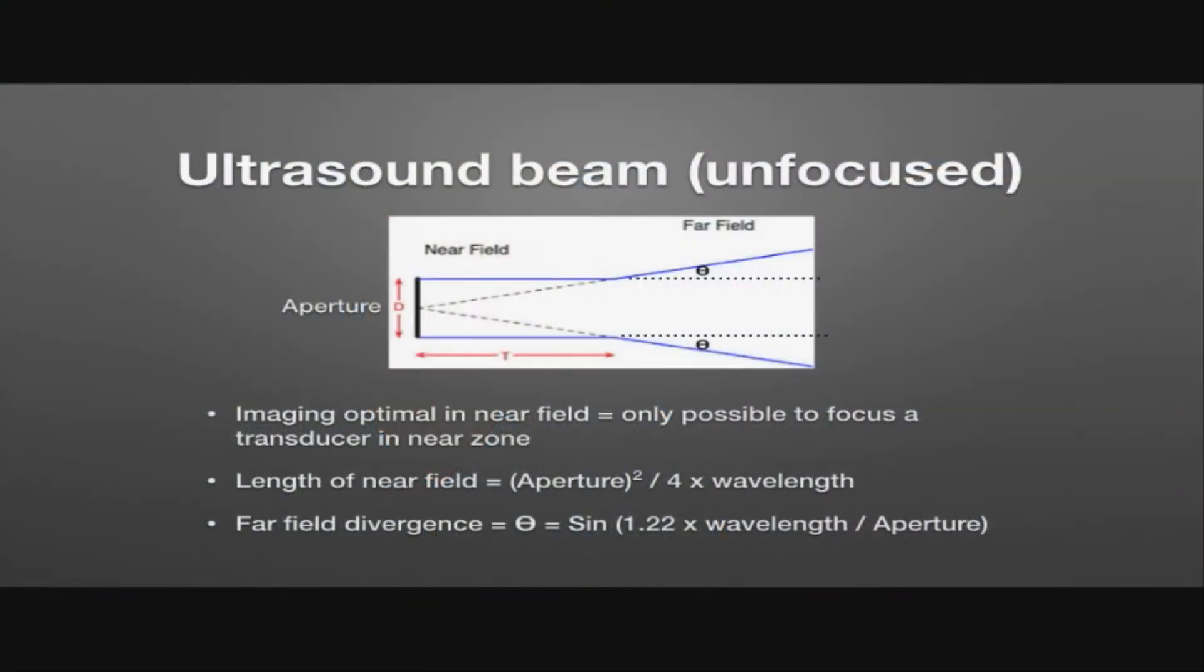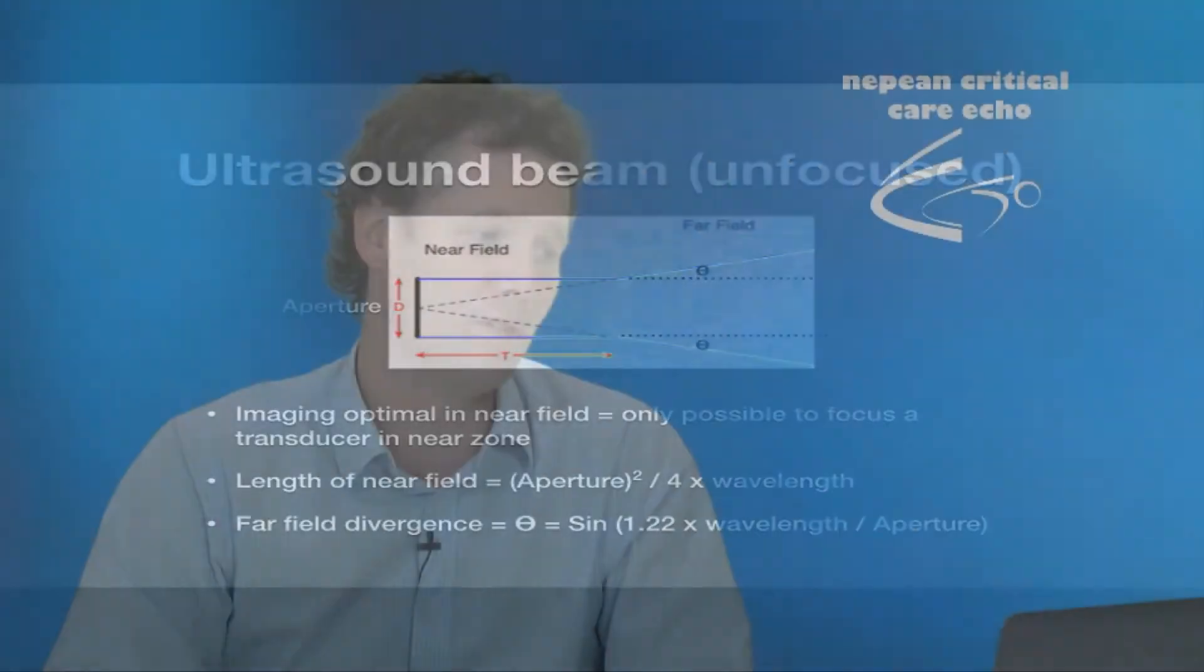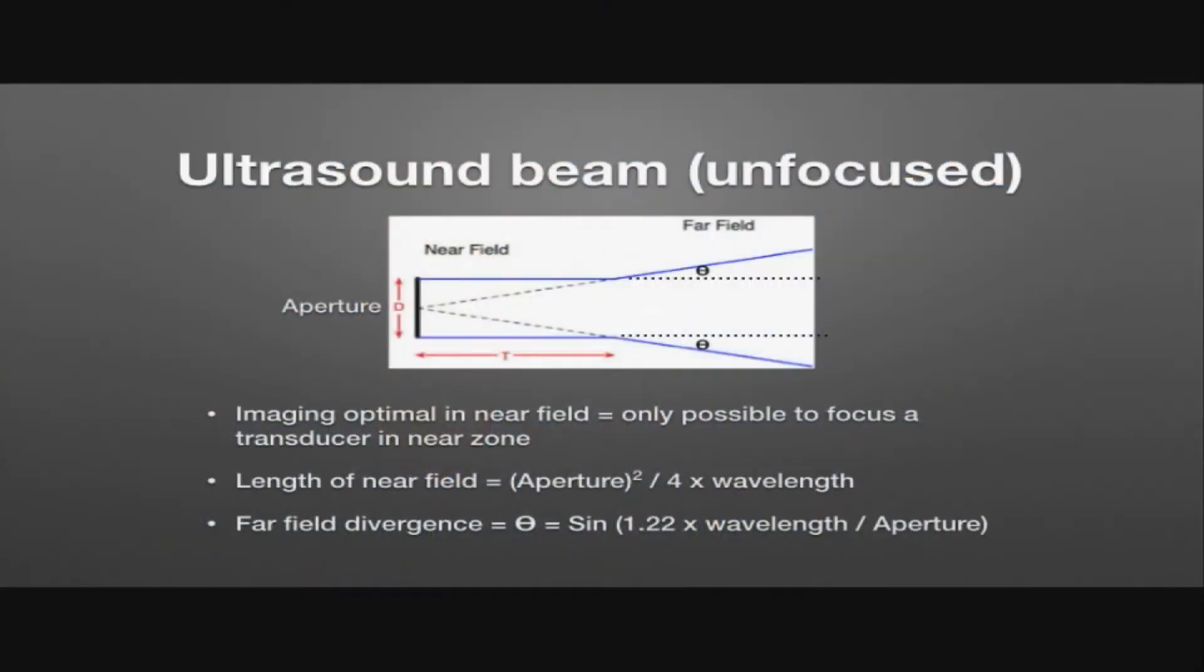There are a couple of equations to remember, they like to bring them up in the exams of course. First of all, the length of the near field is aperture squared divided by 4 times the wavelength. So we'll see that the length of the near field is proportional to the aperture, and it's inversely proportional to the wavelength. In terms of far field divergence, we measure that as the angle theta, and that is equal to the sine of 1.22 times the wavelength divided by the aperture. So we can see from this that theta is proportional to the wavelength, and inversely proportional to the aperture.